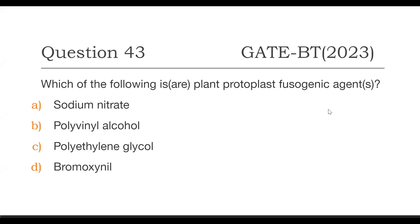Welcome everyone. Today I'll be solving question number 43 of the 2023 GATE Biotechnology paper. The question asks which of the following is or are plant protoplast fusogens — there can be multiple correct answers. The options given are: sodium nitrate, polyvinyl alcohol, polyethylene glycol, and bromoxynil.